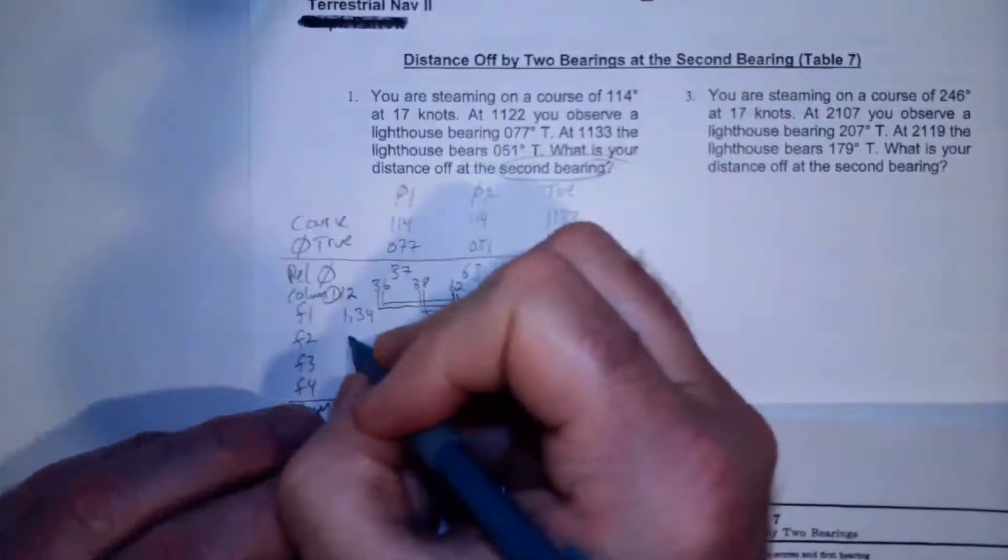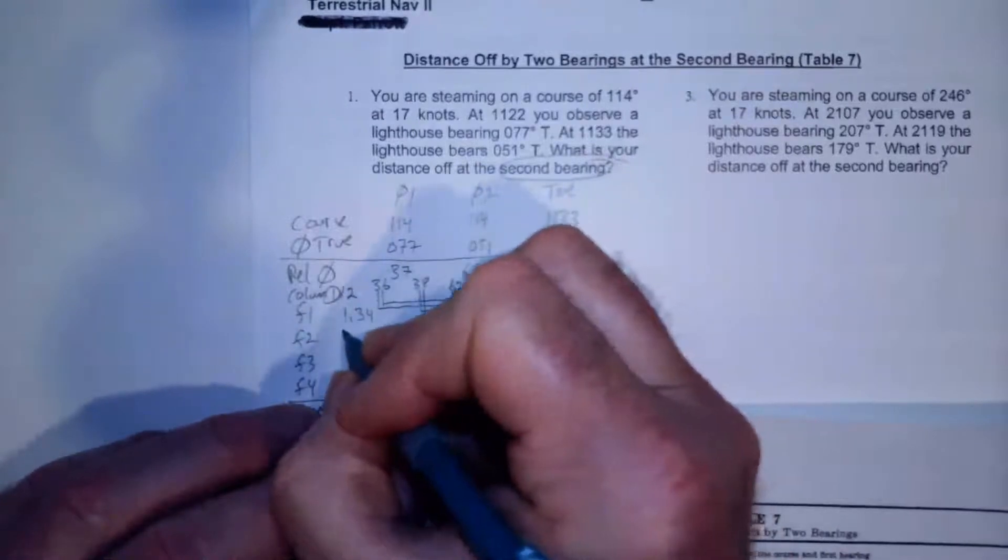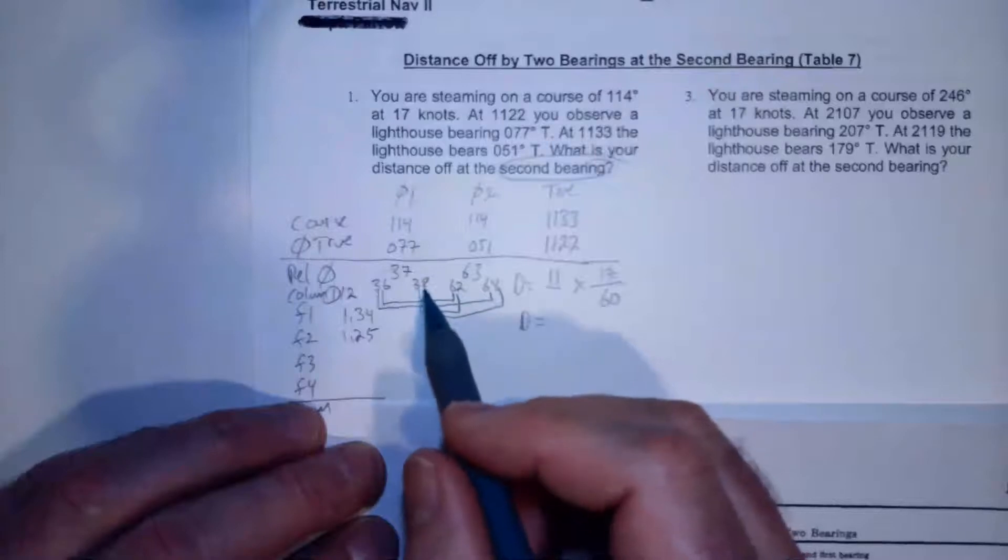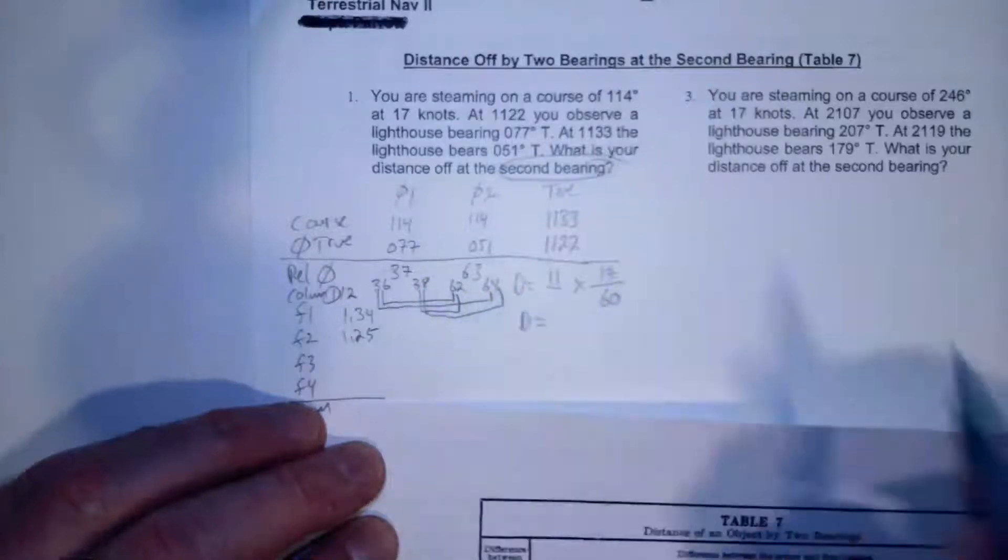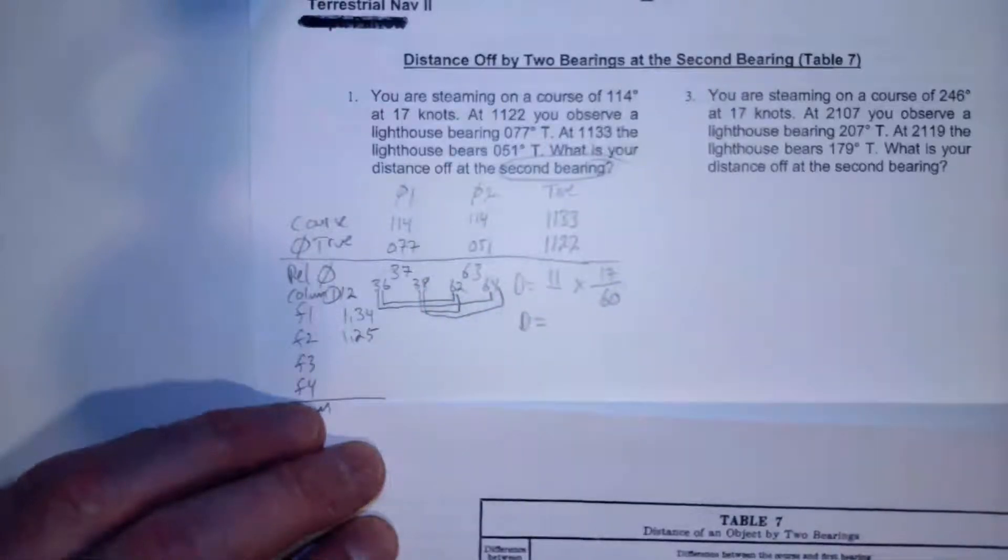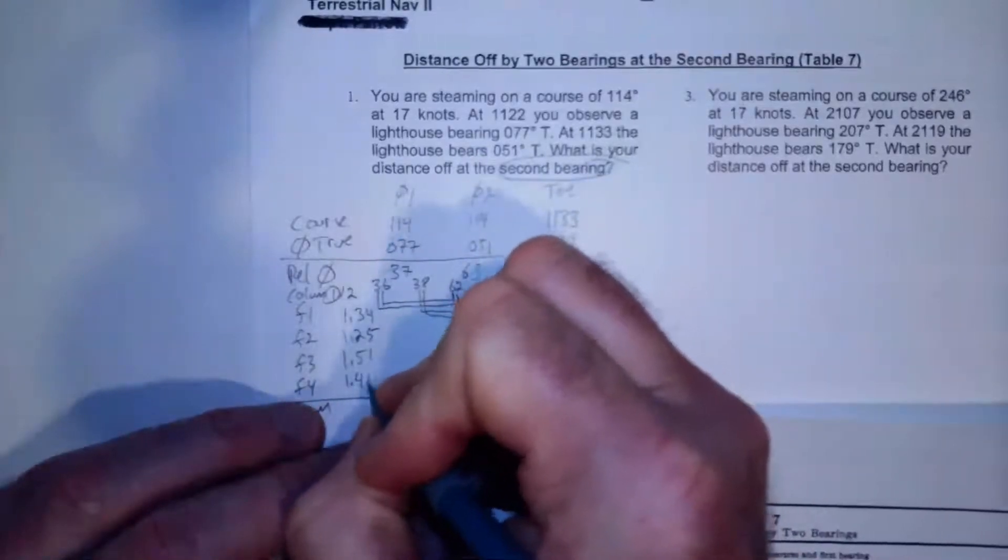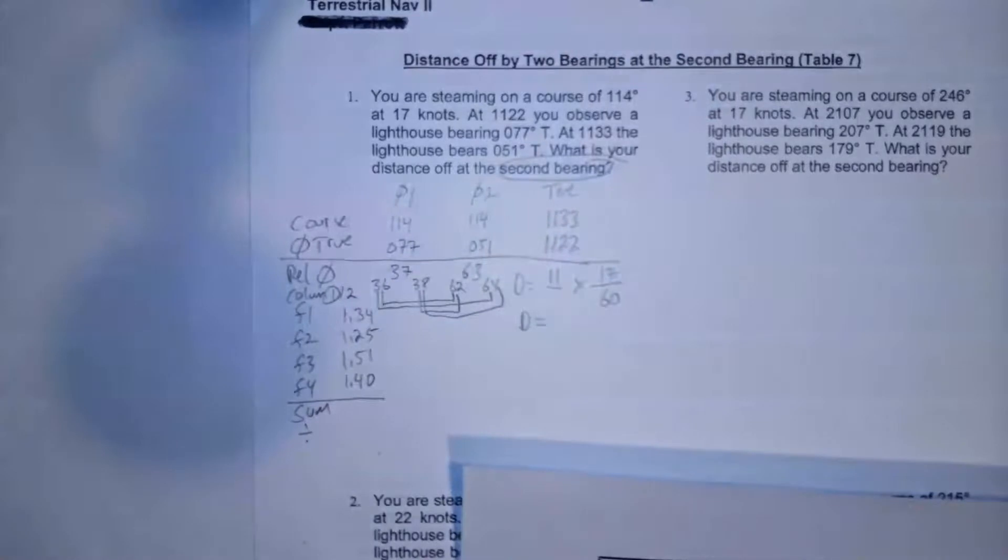My second factor is 1.25. And now I've done those two, now I'm going to switch to 38, I'm going to get 38, 62, 38, 64. So I come to 38, first column, so then I'm going to get these two factors. So 1.51 and 1.4. Great, so I've got my four factors.